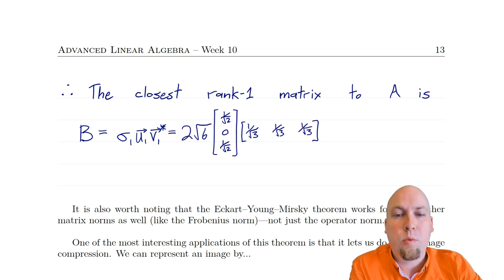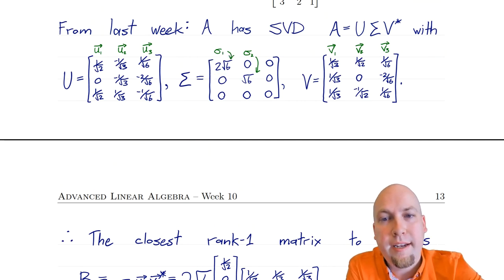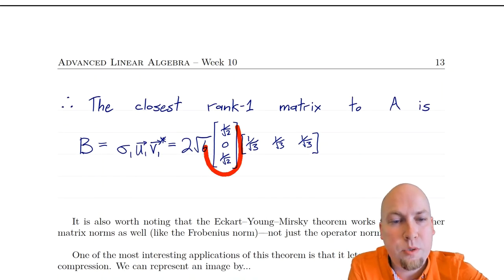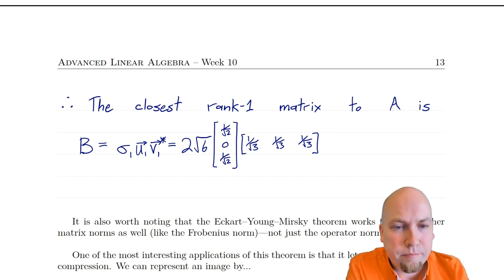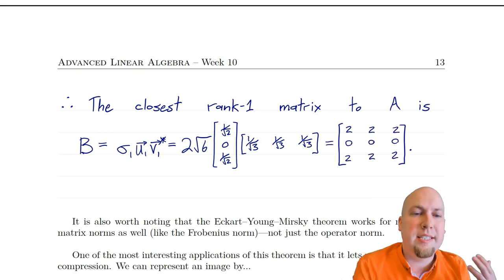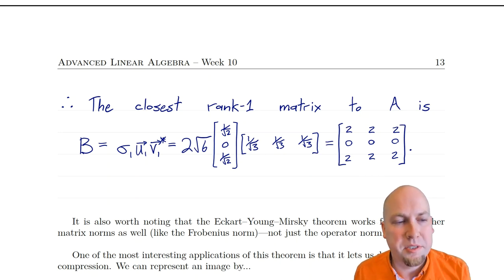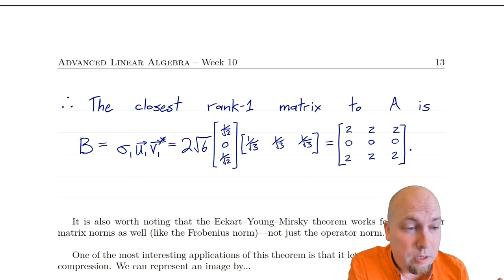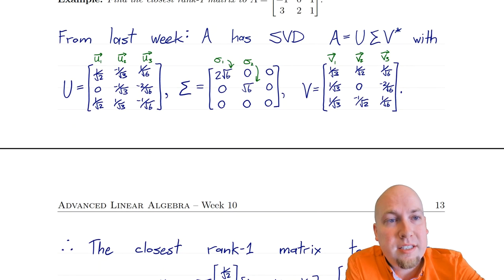Sigma_1 equals 2 root 6, which is that first diagonal entry. U_1 is the first column vector, and V_1 star is the conjugate transpose of the first column of V — now a row vector. Multiplying all these together, all the square roots cancel out nicely, giving the matrix with rows [2, 2, 2], [0, 0, 0], [2, 2, 2]. You can verify this is rank one by row reduction — you get just one non-zero row. And this is the closest rank-one matrix to the original A, minimizing the operator norm of A minus B.